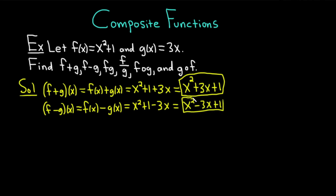Just a warning here: if g has two terms, you really want to put parentheses around the g of x expression. For example, if it had been 3x plus 7, then you would have needed the parentheses because the negative would distribute. So just keep in mind that with subtraction, if you have more than one term, you're going to need those parentheses.